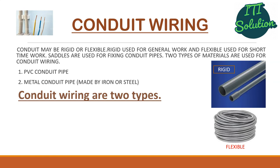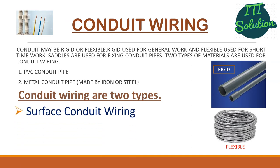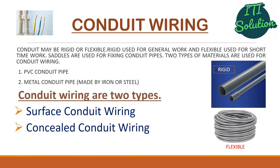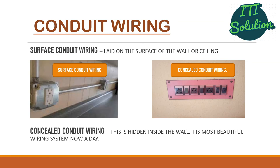Now we discuss about conduit wiring. Conduit may be rigid or flexible. Rigid type is used for general work, while flexible type is used for short-term work. Saddles are used for fixing conduit pipe. Two types of materials are used for conduit wiring: one is PVC conduit pipe and another is metal conduit pipe made by iron or steel. Conduit wiring is of two types: surface conduit wiring and concealed conduit wiring. In surface conduit wiring, the conduit is laid on the wall or ceiling surface.